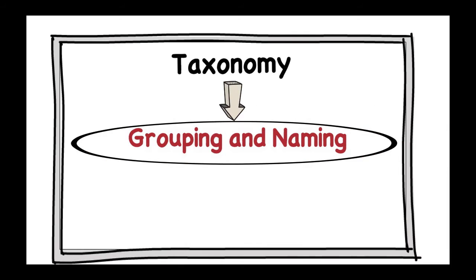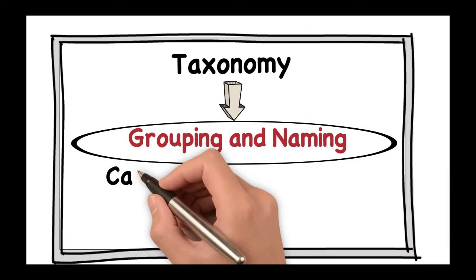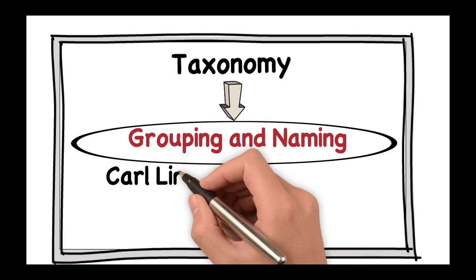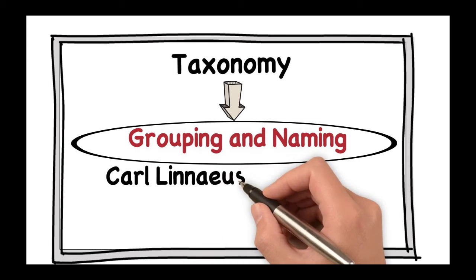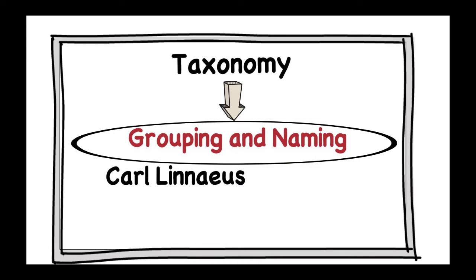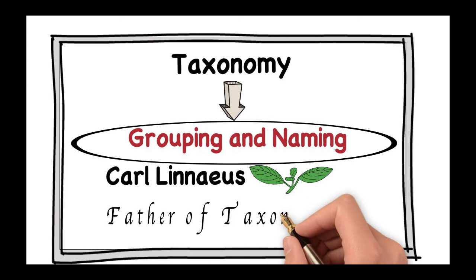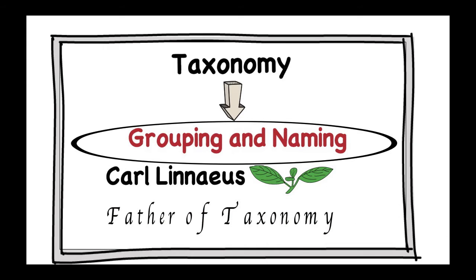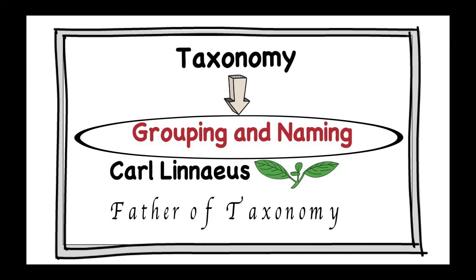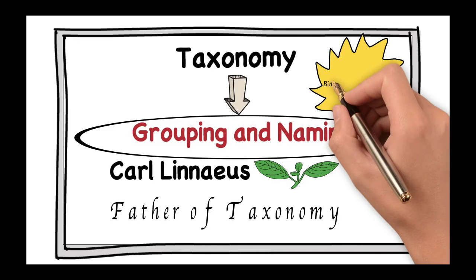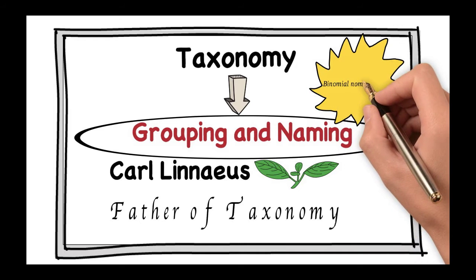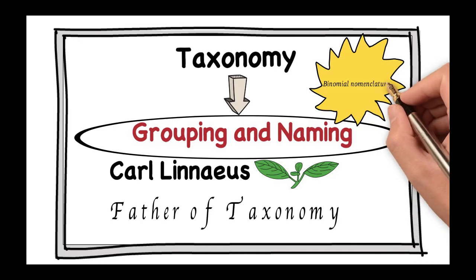Someone of great importance to taxonomy is Carl Linnaeus. He was a Swedish scientist, a botanist, and he's known as the father of taxonomy because he came up with, among other things, the way in which we name organisms. This is known as binomial nomenclature and it's still used to this day.